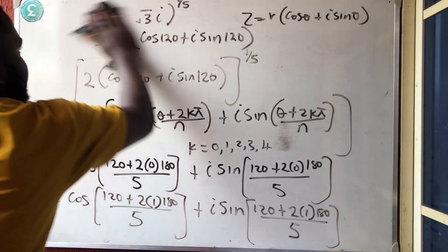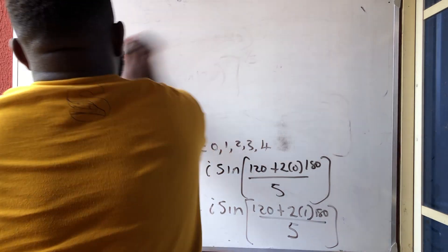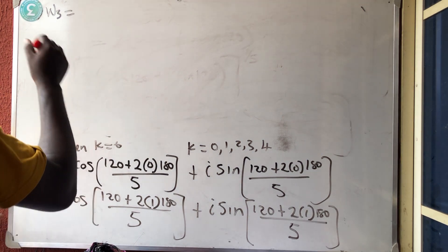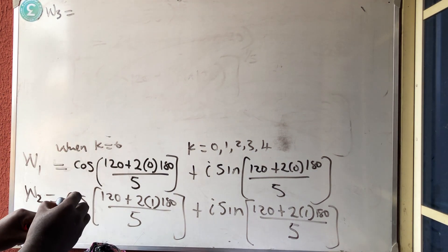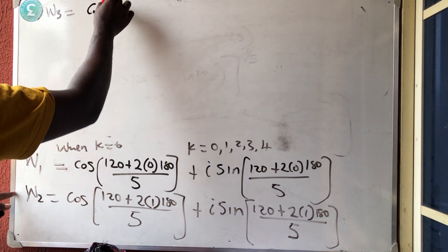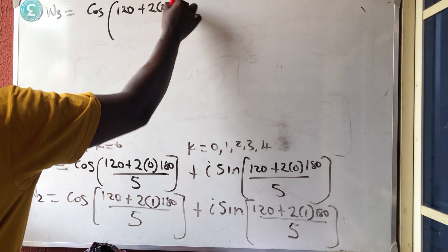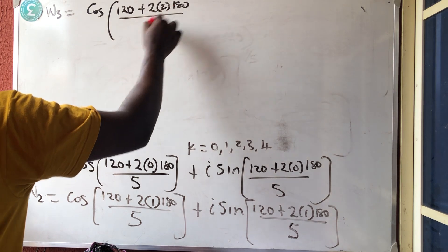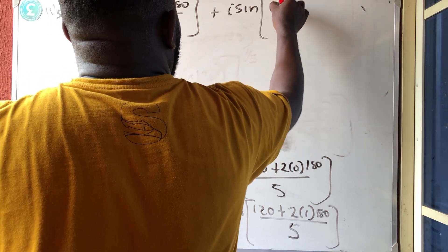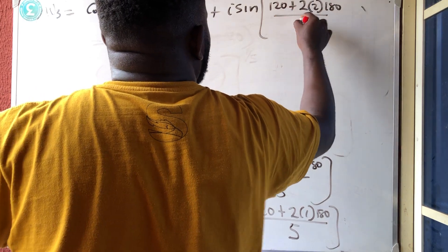You are going to have 5 terms. So the third one, W3, is when k is now 2. You are going to have cos(120 + 2 × 2 × 180) over 5, plus i sine(120 + 2 × 2 × 180) over 5.